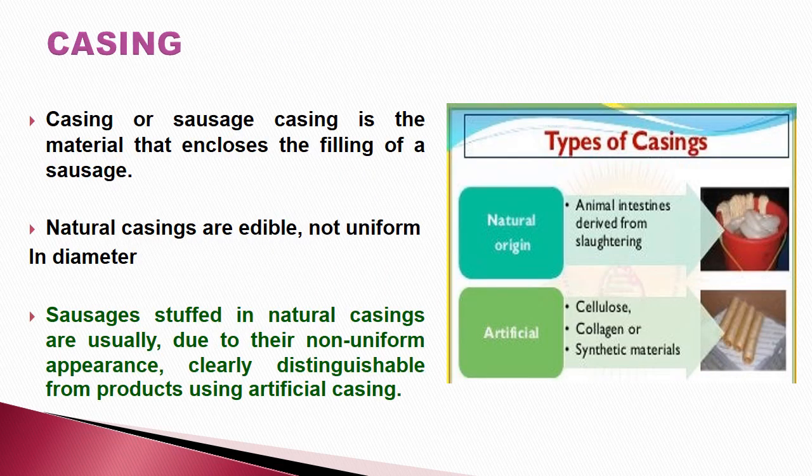Casing is the outer lining from the intestine after processing, which is used as the container enclosing the filling of a sausage. Such casings are called natural casings; there are also artificial casings. Natural casings are edible, and when the sausage batter is stuffed, they will show some non-uniformity, making them easy to identify. Synthetic casings are perfectly uniform throughout.